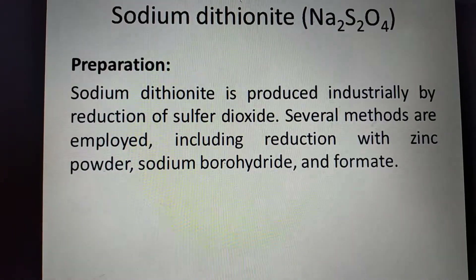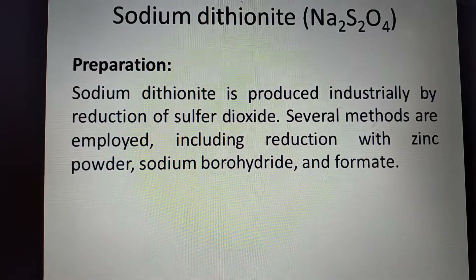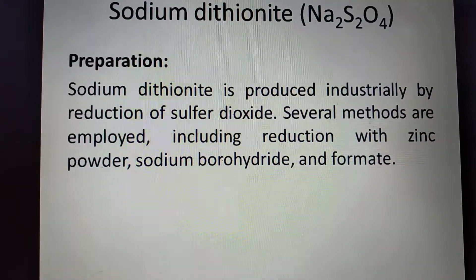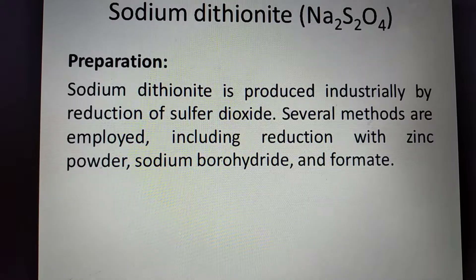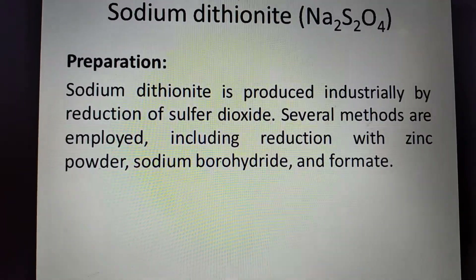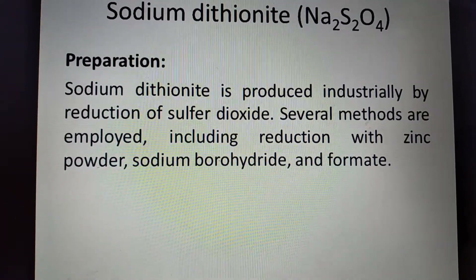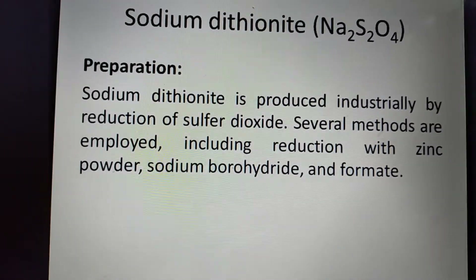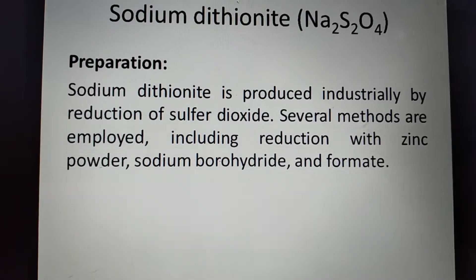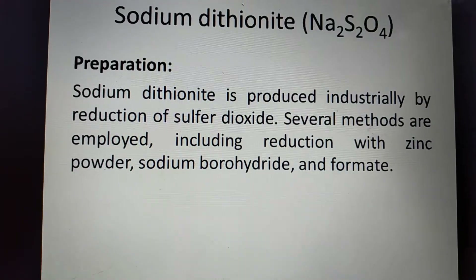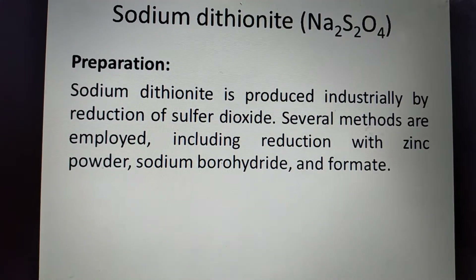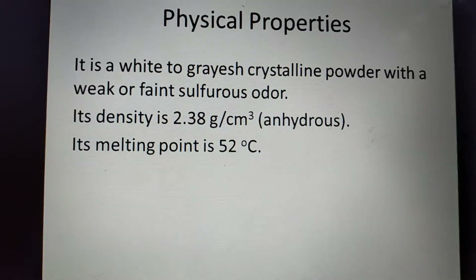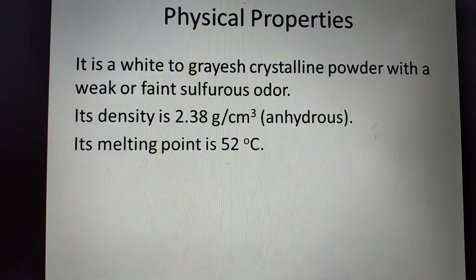Sodium dithionite is produced industrially by reduction of sulfur dioxide — it is a very good reducing agent. Several methods are employed, including reduction with zinc powder, sodium borohydride (NaBH₄), and formate. Sodium borohydride is also used for its preparation.